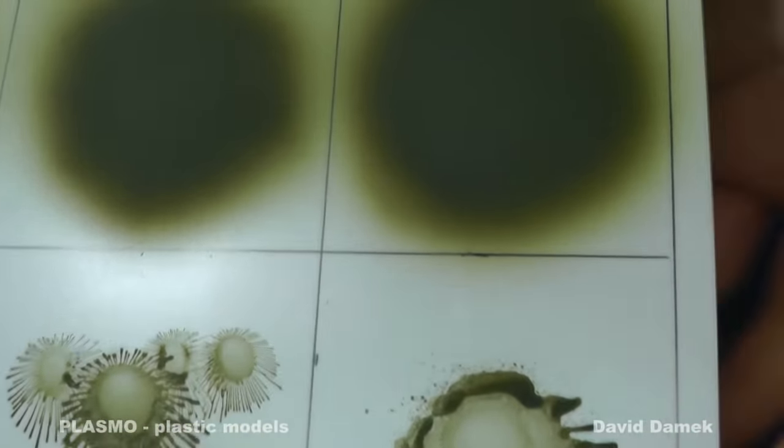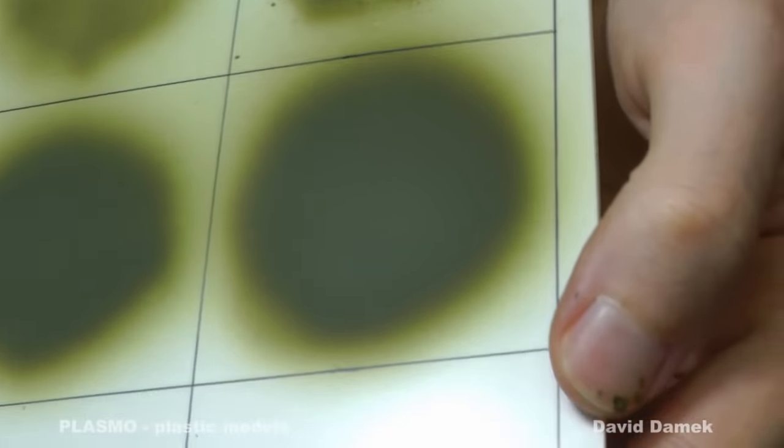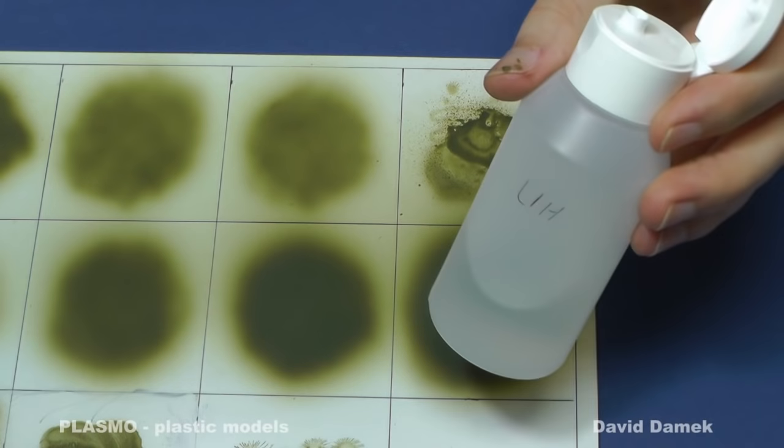Only sometimes it's suitable to use a retarder. Some paints dry too fast and droplets of the paint dry before reaching the model's surface, which creates a coarse layer of paint.